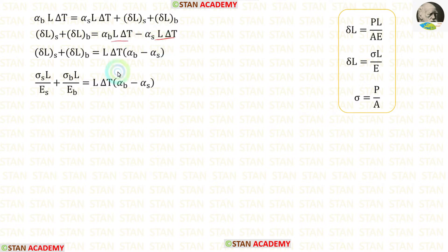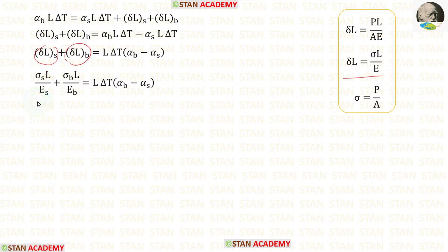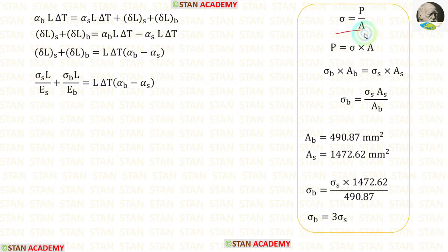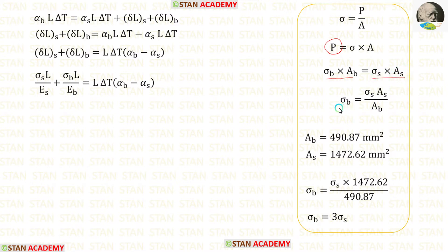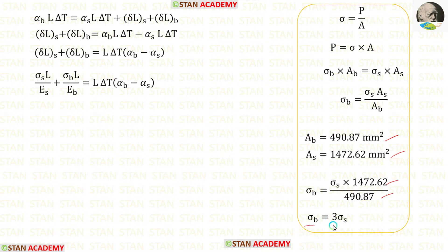L and delta_T are common and can be factored out. We know the formula for change in length is PL upon AE, and since PL/AE equals sigma × L, we can substitute sigma for each term. The load P is the same in both materials, so sigma_b × A_b equals sigma_s × A_s. From this, sigma_b equals sigma_s × A_s divided by A_b. Using the calculated areas, we get sigma_b equals 3 × sigma_s.